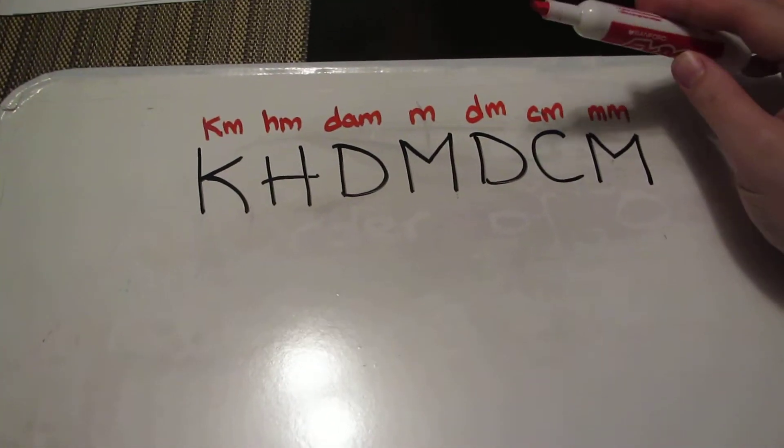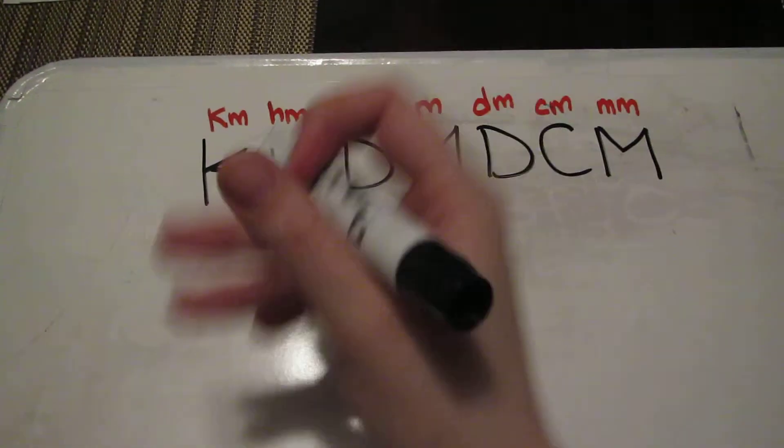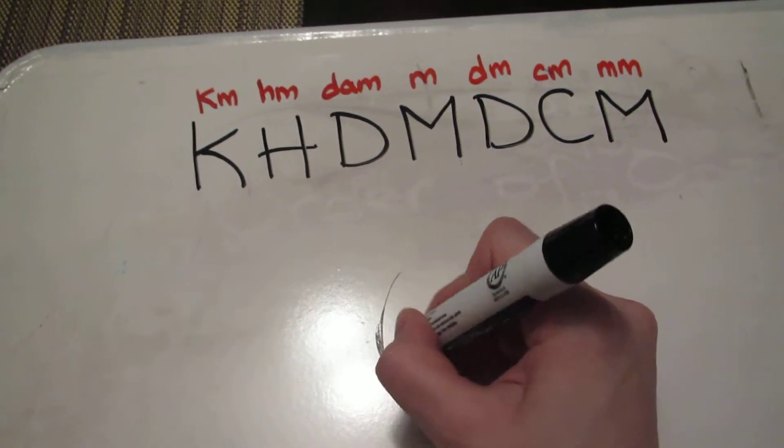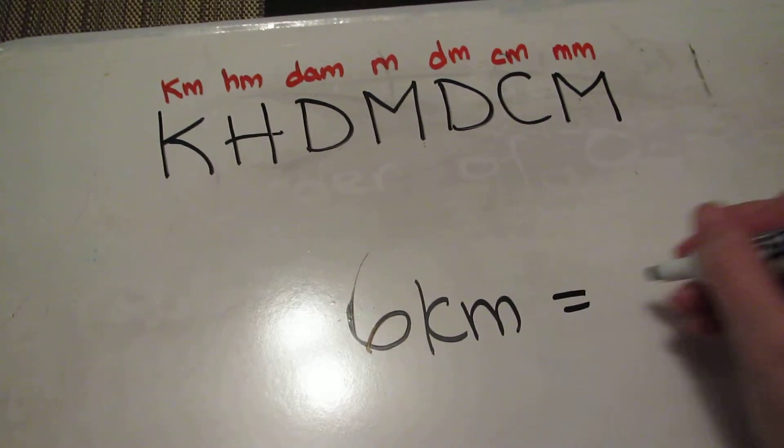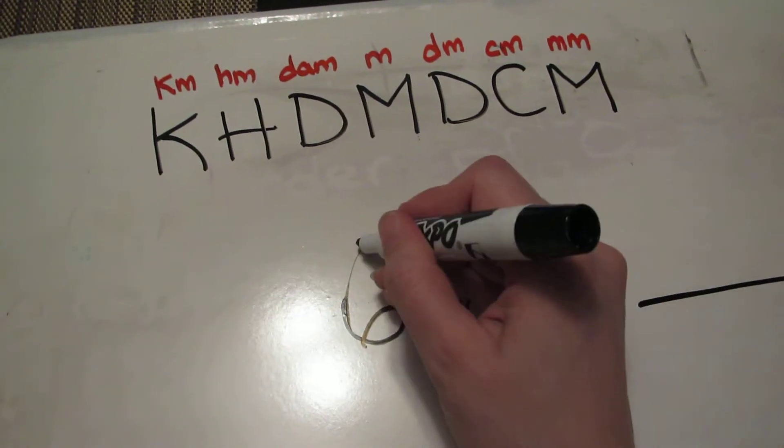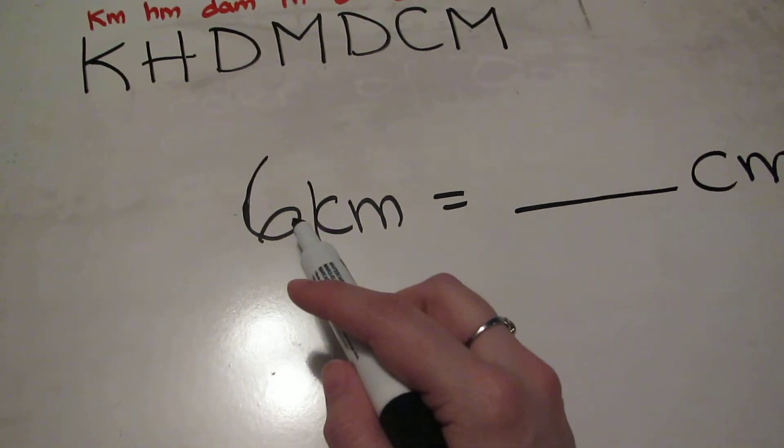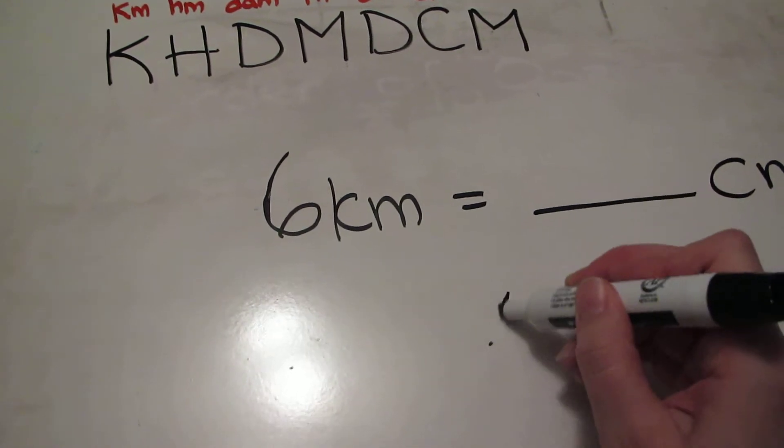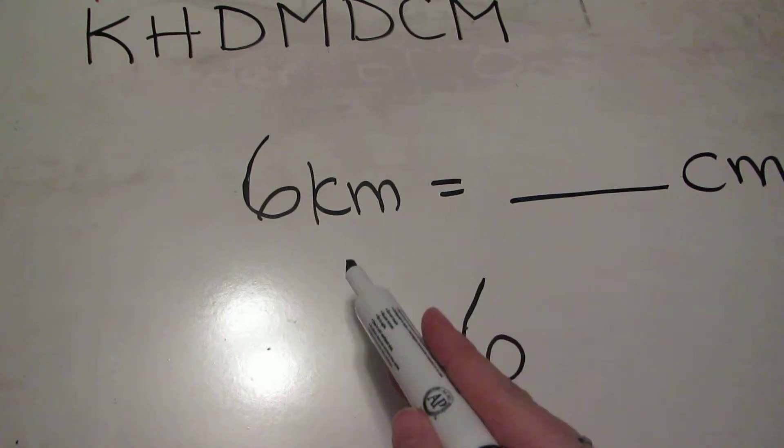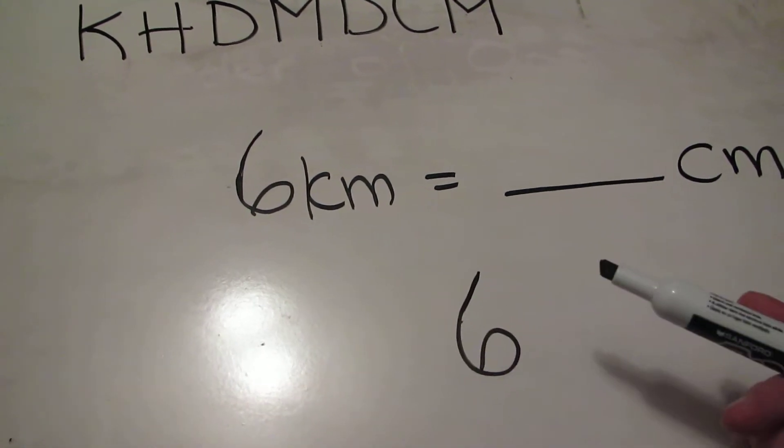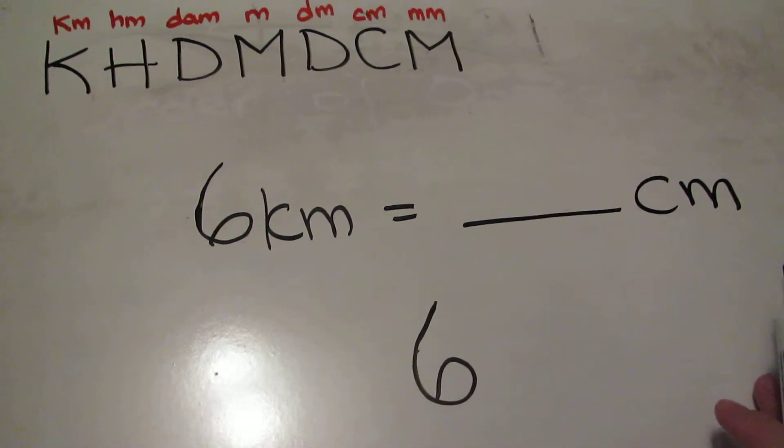Let's look at some examples of how you would use this. Starting with six kilometers equals how many centimeters. Using this, we have our six as a whole number and I'm going to write it again over here. The reason why I want to write it again is if I start moving my decimal, I don't want to run into the letters because it might be hard for me to understand what I'm writing, so I'm going to write it separately so it's nice and clear and I have a lot of room.